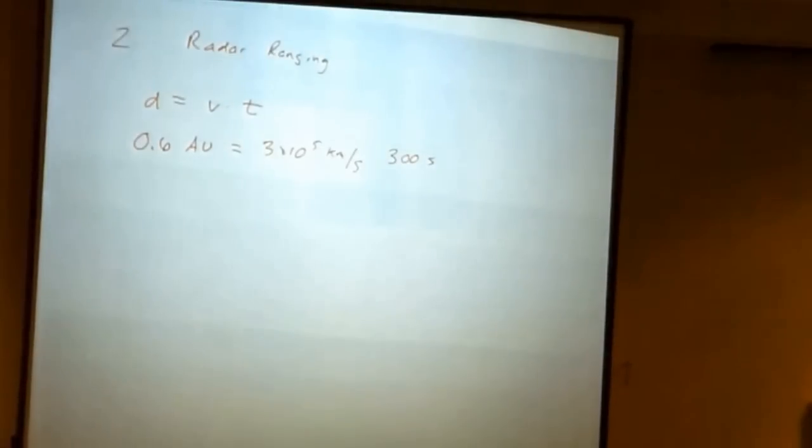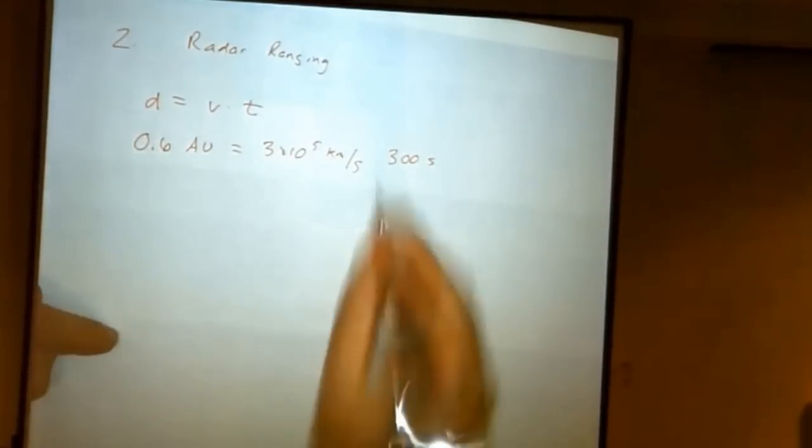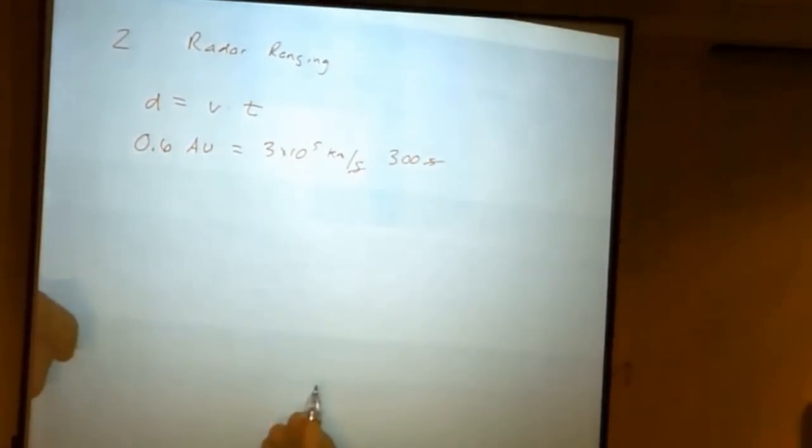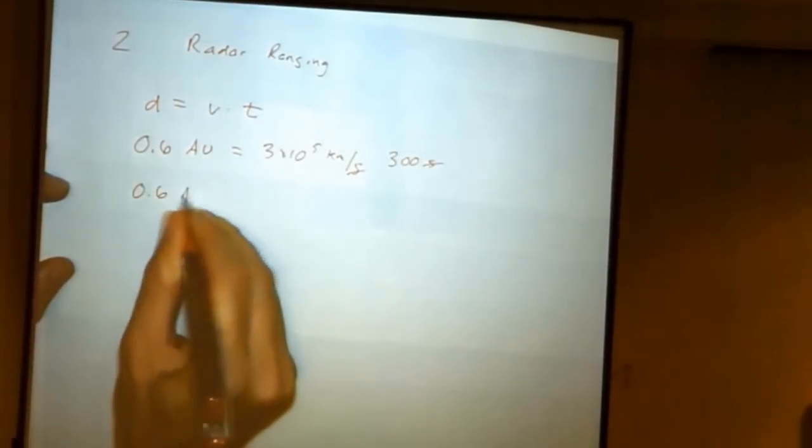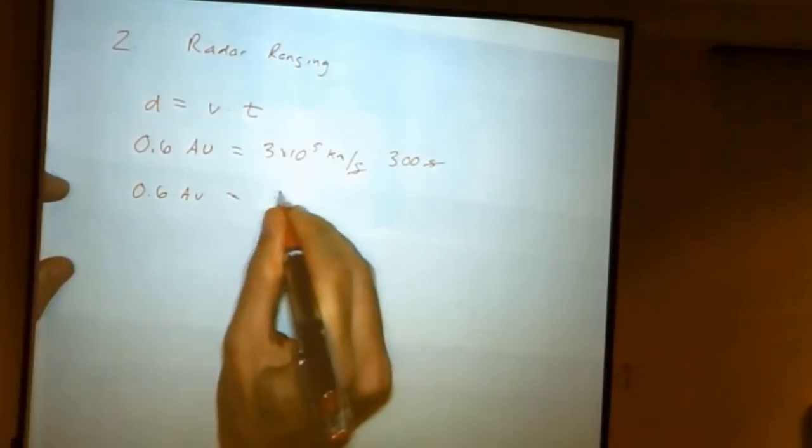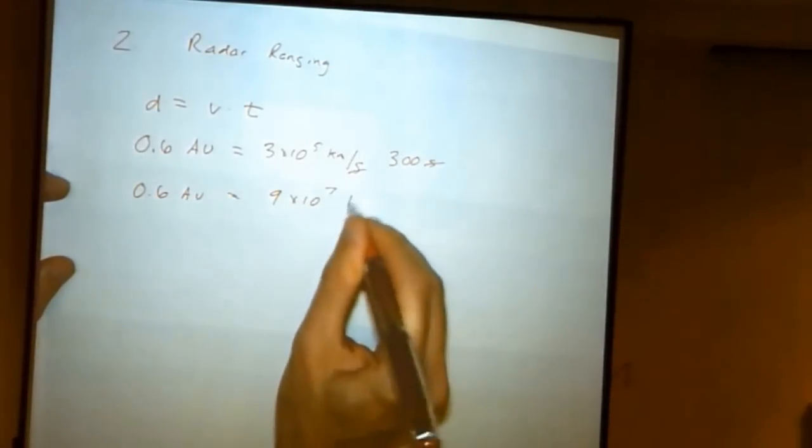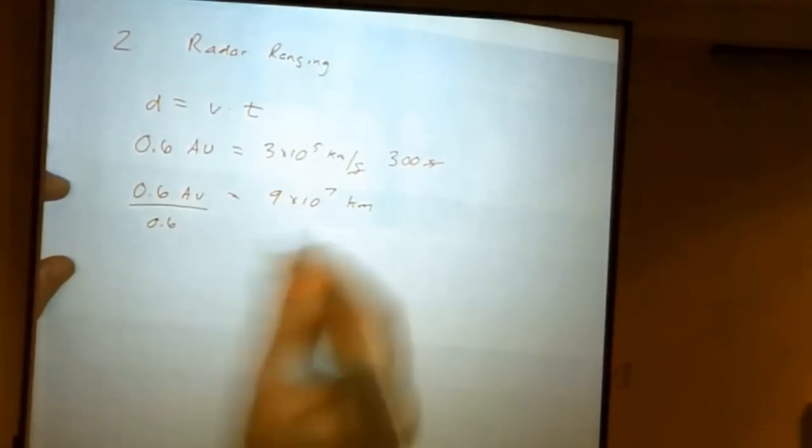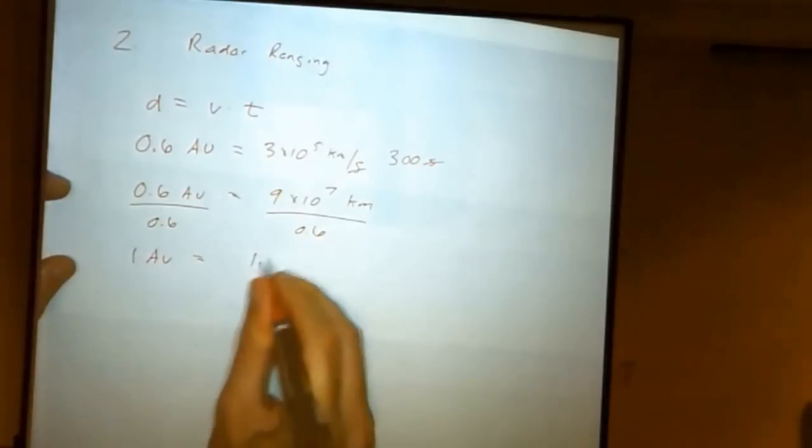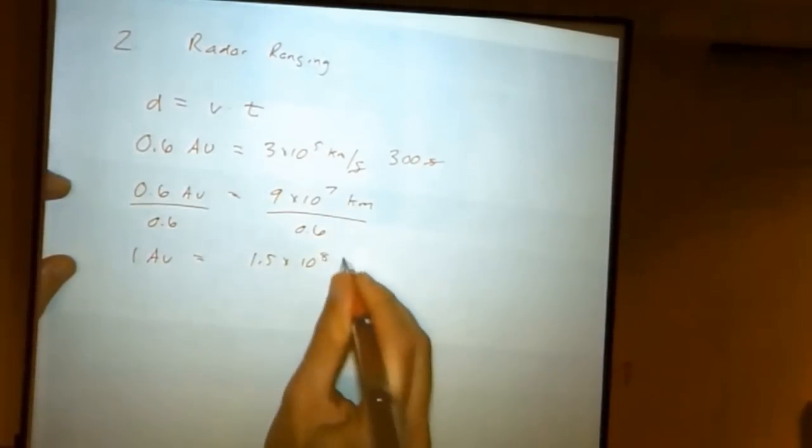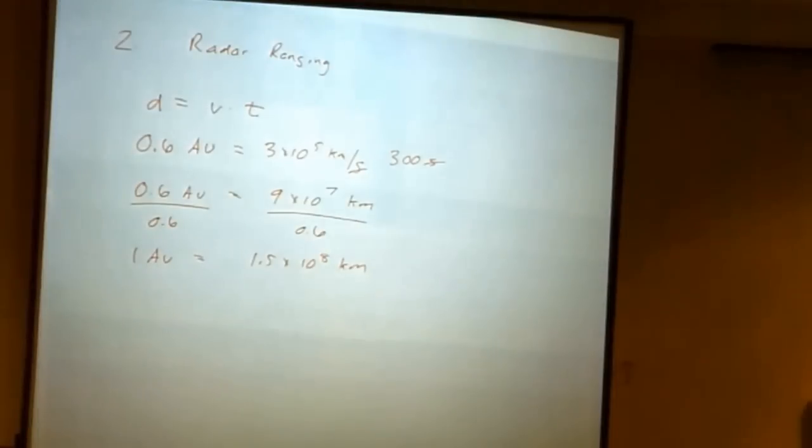That shows you how far away it is. Communication round trip timescale of Venus, about five minutes. The seconds cancel. So we have 0.6 AU is equal to 9 times 10 to the 7 kilometers. Divide both sides by 0.6. You get 1 AU is equal to, again, of course you come up with the same result, 1.5 times 10 to the 8 kilometers. So those are the two primary ways we know how big an astronomical unit is, and consequently how big the solar system is.